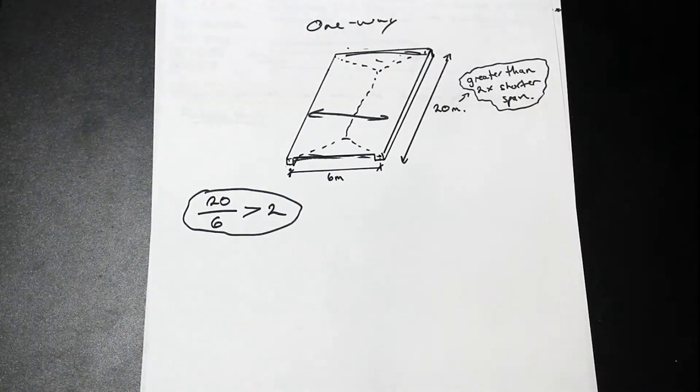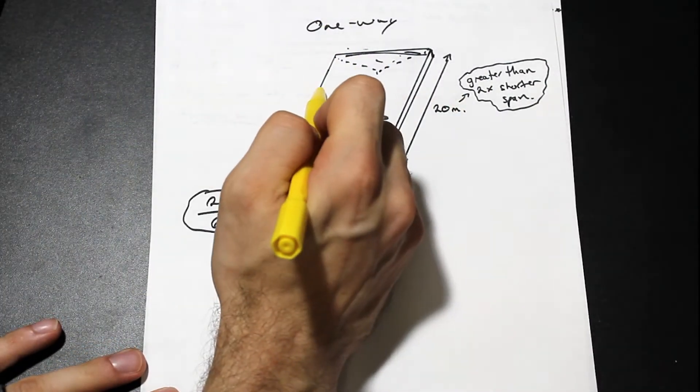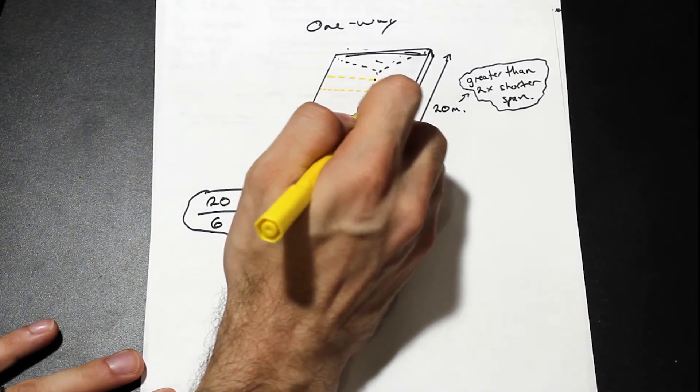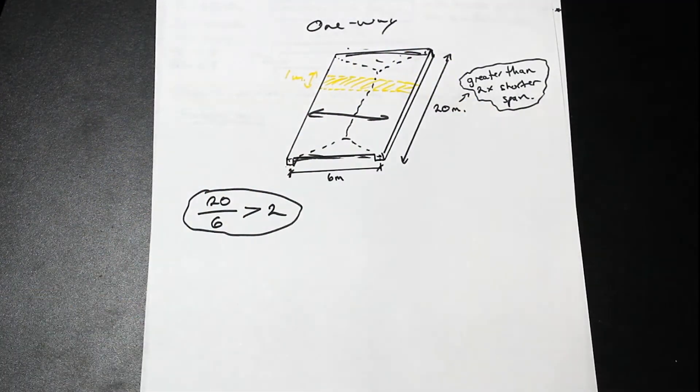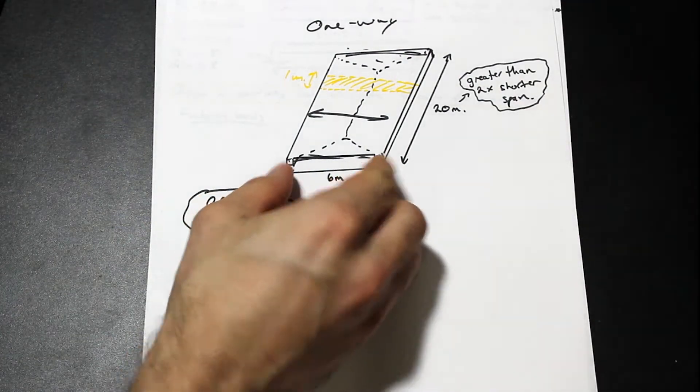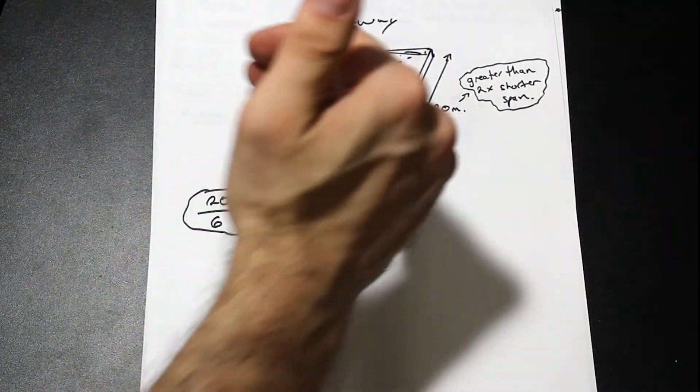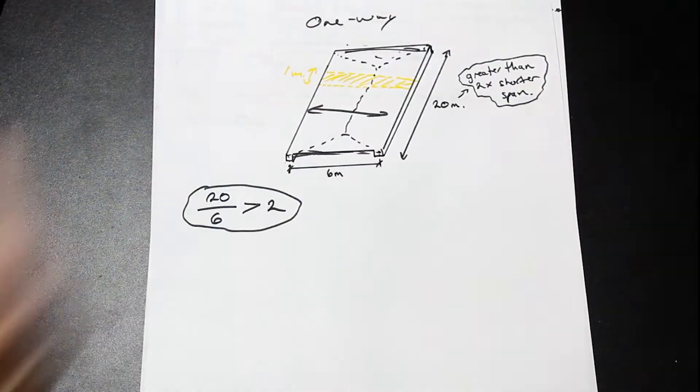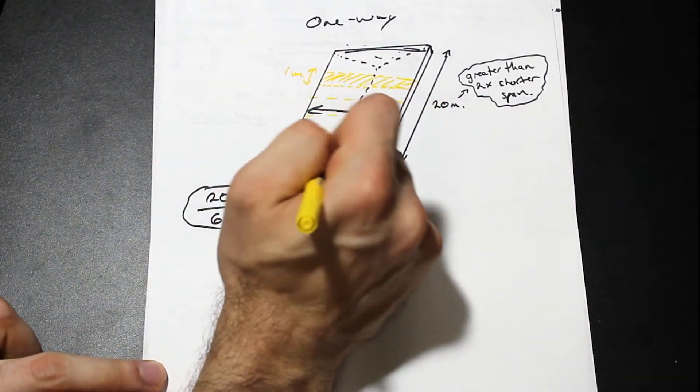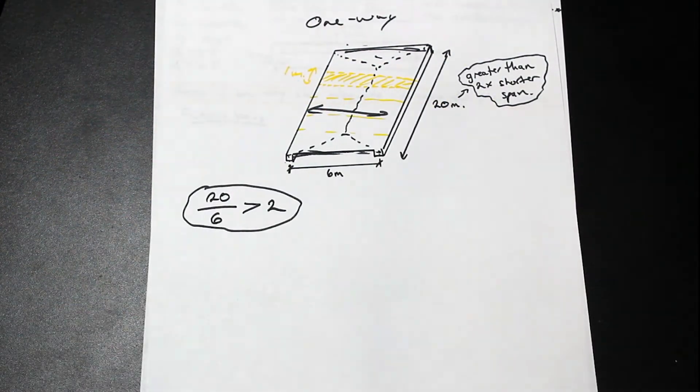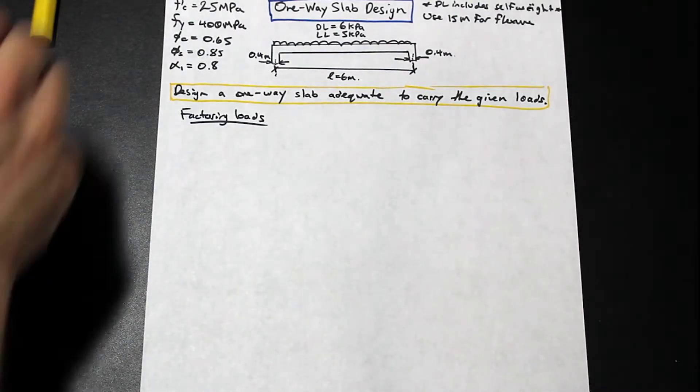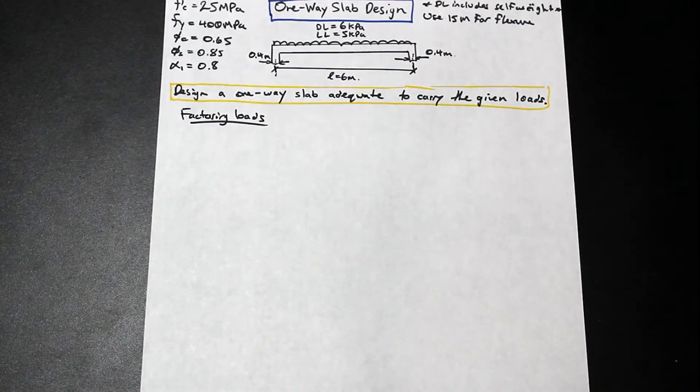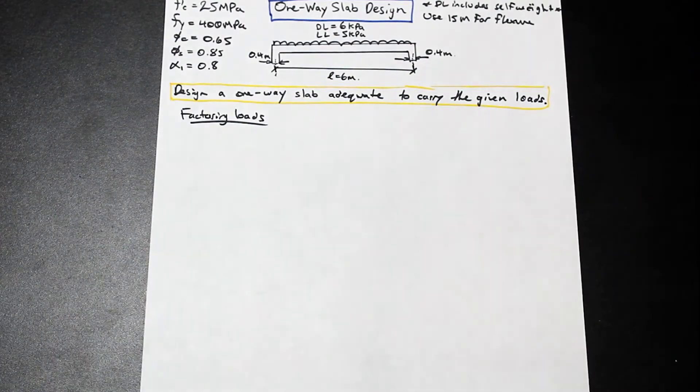Now, when we design a one-way slab, because most of the load is going this way, we design for a one-meter strip along this direction. So we have a one-meter strip there, and we're going to consider our span is six meters, center to center. We're going to design a one-meter cross-section like this, find the reinforcement, and then we're going to place that along the slab this way. We'll have lots of kind of one-meter strips like this that we designed. So I hope that is a good explanation. That's kind of a really important thing to understand, actually, when we start one-way slabs, because you need to understand what one-way means, which way the load is being transferred.